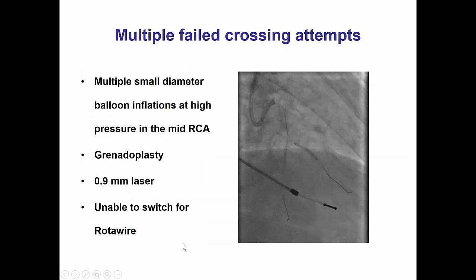In this particular case, we tried several small balloons but none would cross. We tried Grenadoplasty, or intentional rupture of the balloon, but that also did not work. We even tried the 0.9 mm laser, which did not work as well. We tried to switch for a rotowire; however, we could not advance the rotablator wire through the occlusion.